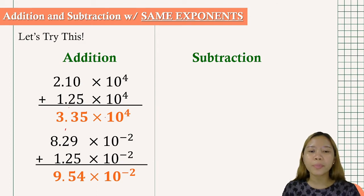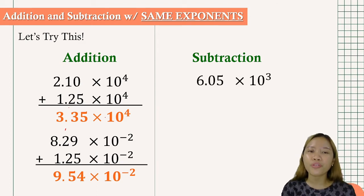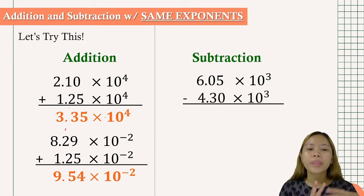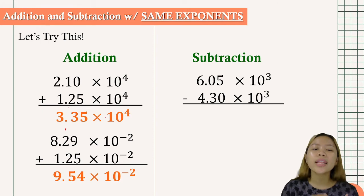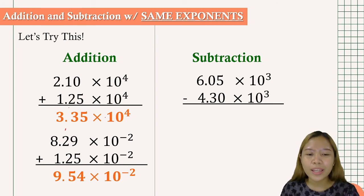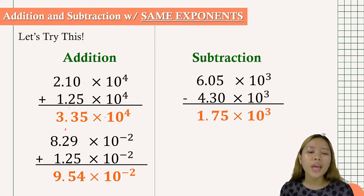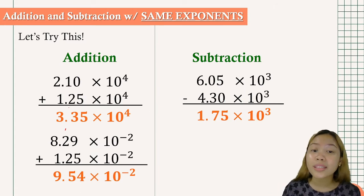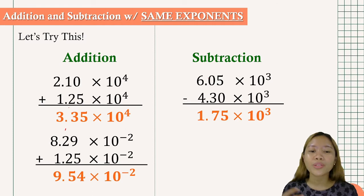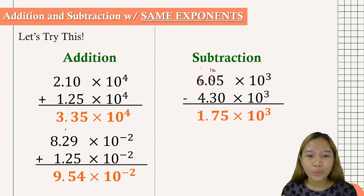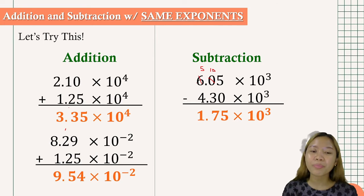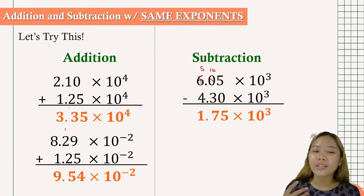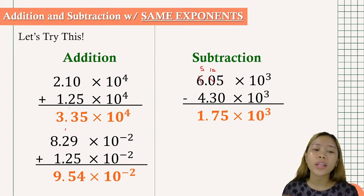Now for subtraction, we have 6.05 times 10 to the 3rd minus 4.30 times 10 to the 3rd. Our answer is 1.75 times 10 to the 3rd. We have 5 minus 0 equals 5; 0 minus 3 requires borrowing 1 from 6, so 10 minus 3 equals 7; and 5 minus 4 equals 1. Bring down the power of 10.